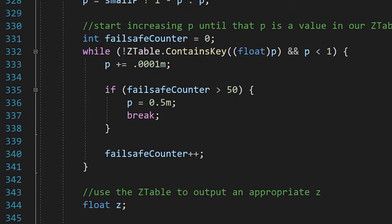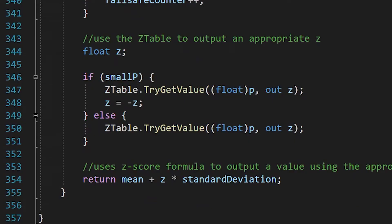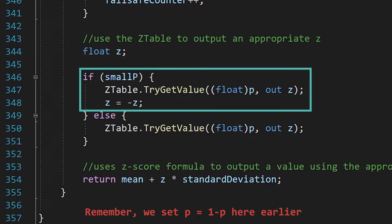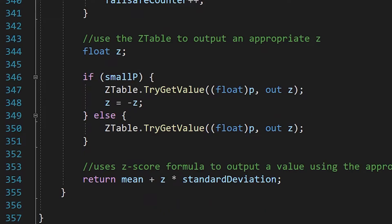Once our p-value is a key in the dictionary, we can stop increasing it. And when I was entering in the values for the z-table, I only did it from 0.5 and up. Because the normal distribution is perfectly symmetrical, so we only really need one side. With that in mind, if our original p is less than 0.5, that's basically just the z-score of a p-value of 1 minus p, but negative. And if our p-value was greater than 0.5 from the start, all we have to do is look up that z-score from the dictionary.